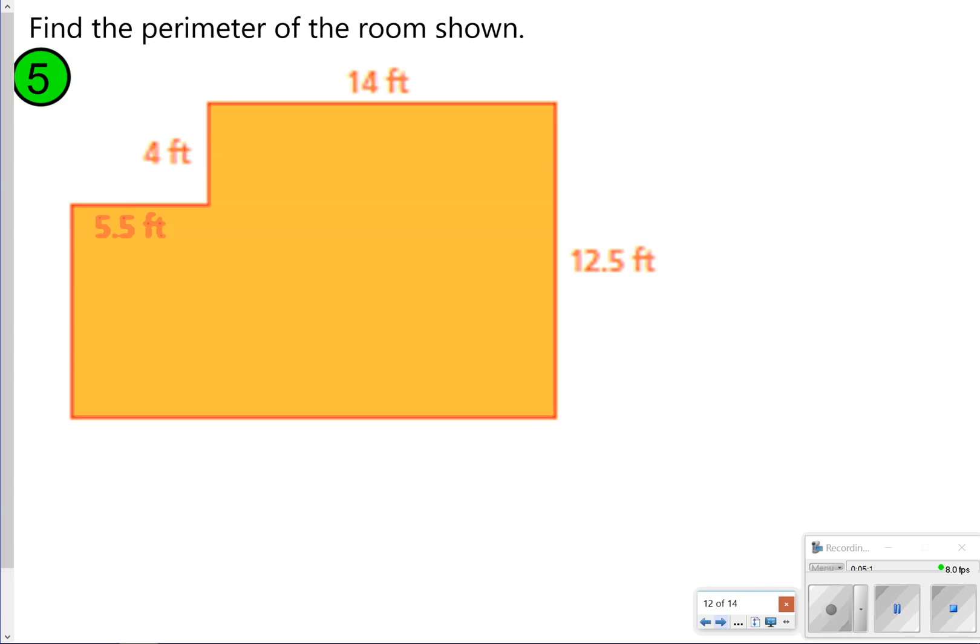Here's our last one that we're going to try. This one, be careful, because you do have some missing sides that you need to take into consideration. So maybe find the missing sides first, and then add them together to find your perimeter. Let's go ahead and pause it. Once you're done, click play to check your work.